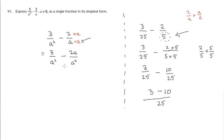So we do have the same denominator, so we can say how many of these a squareths do we have? We've got 3 of them minus 2 a of them.